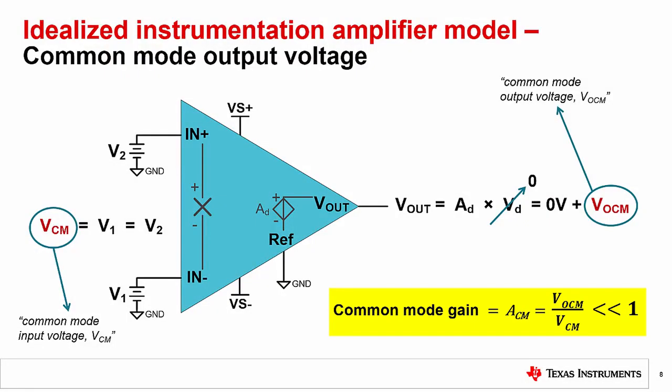For an ideal instrumentation amplifier, ACM is equal to zero. In a later practical example, we will see how you can use a product datasheet to find the practical value for this gain.